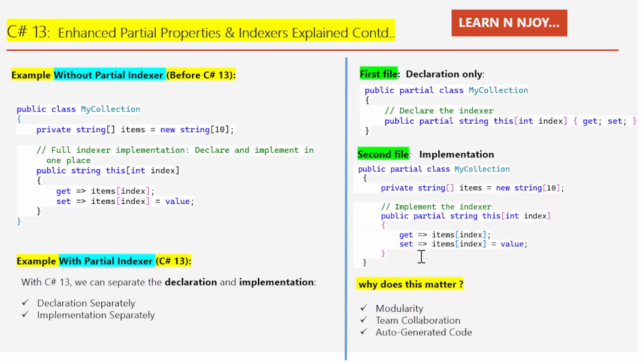With C# 13, we can now make indexers partial just like properties. Why use these features? There are three specific reasons. Number one: modularity — splitting declaration and implementation makes your code cleaner and easier to manage. Number two: team collaboration — multiple developers can work on different parts of a class without stepping on each other's toes. Number three: auto-generation — frameworks or tools can generate the declaration and you can focus only on the implementation. This is a big deal for large-scale or enterprise-level applications.